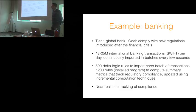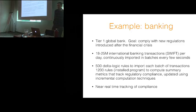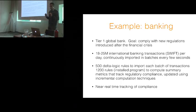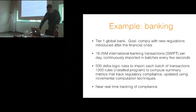Here are a few example applications. One of our clients is a tier-one global bank trying to comply with new regulations introduced after the financial crisis. The specification requires importing 18 to 25 million transactions per day, continuously in batches every few seconds. To process these, there are 500 rules that slurp the data into the system and about 1,200 rules that compute all of the summary statistics needed for regulatory compliance. In near real time, they can track how much money they have and various financial statistics, and make sure they're in compliance with the regulations.